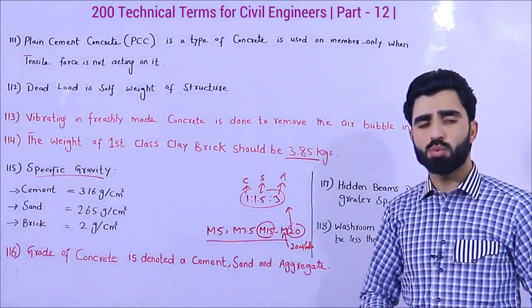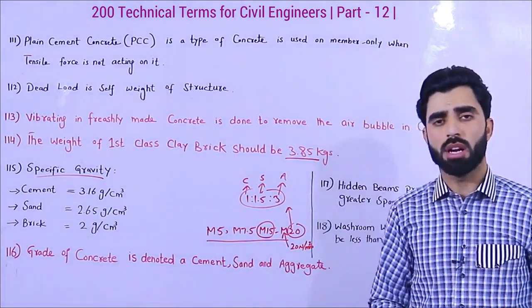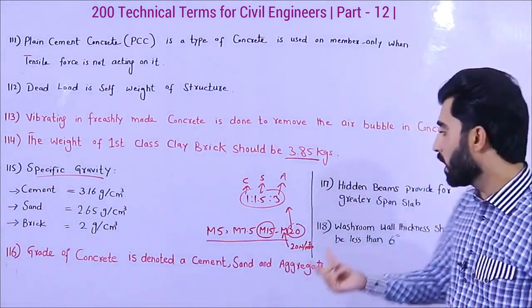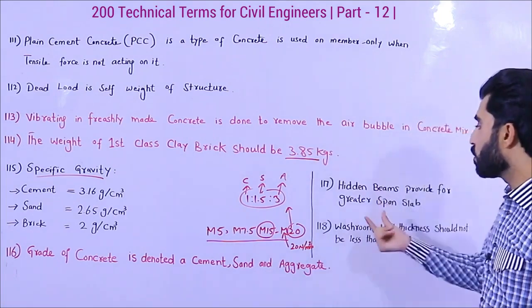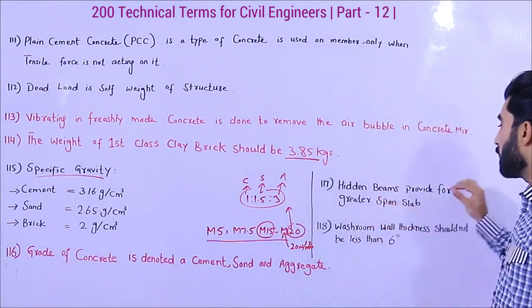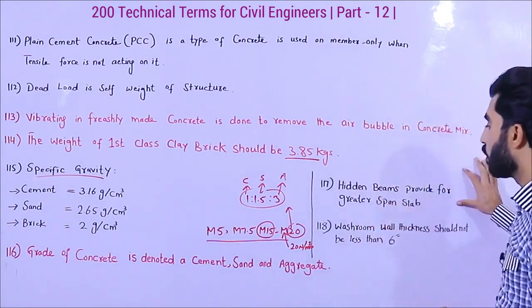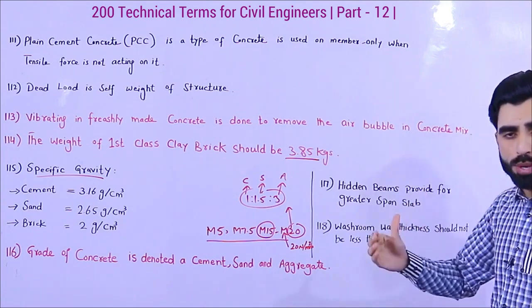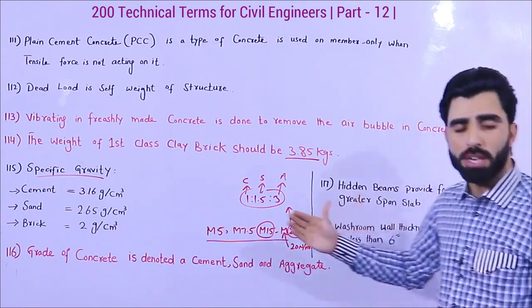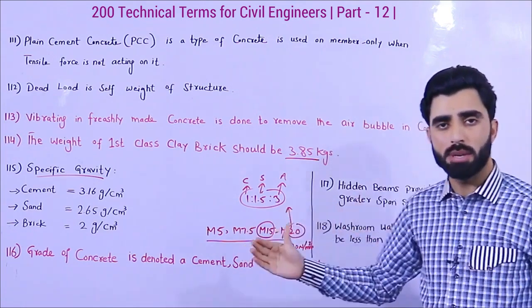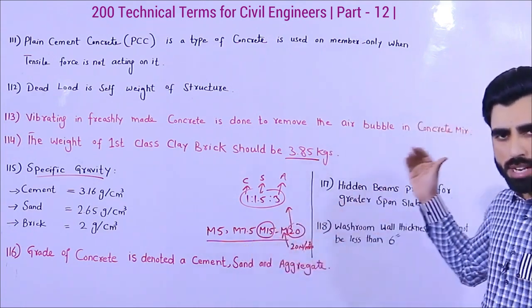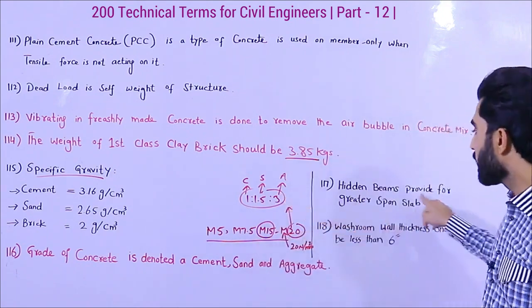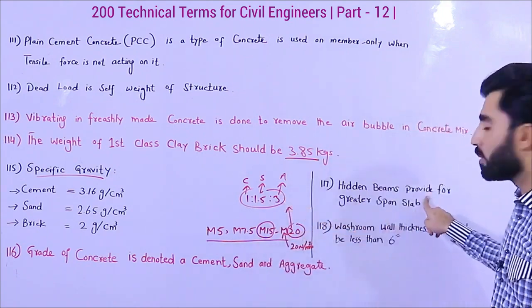Term number 117 is about hidden beams or concealed beams. We use concealed beams or hidden beams in slabs. Hidden beams are provided for greater span slabs — when we have a greater span in a slab, we should provide a concealed beam. Hidden beam and concealed beam refer to the same thing.